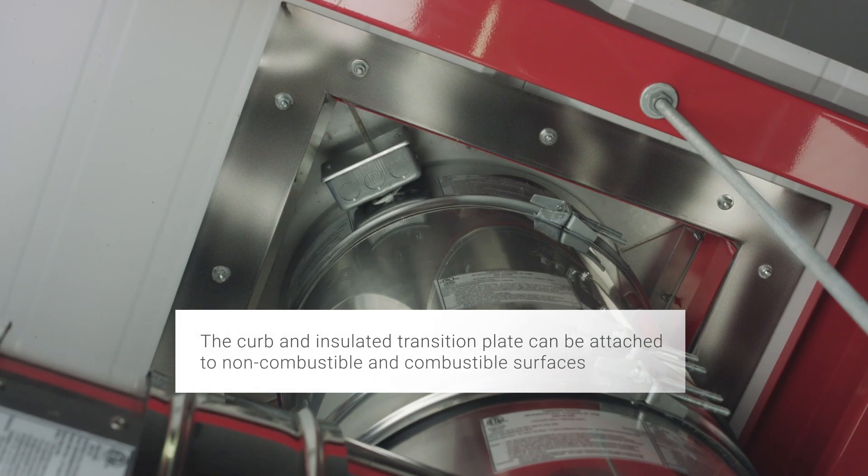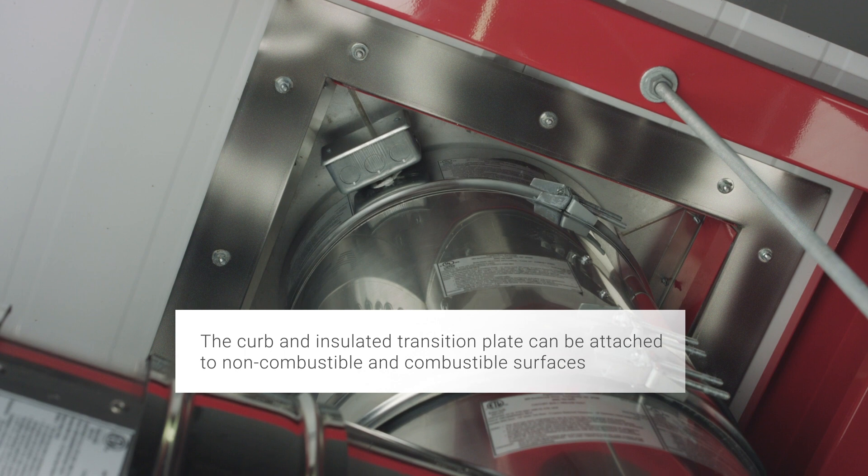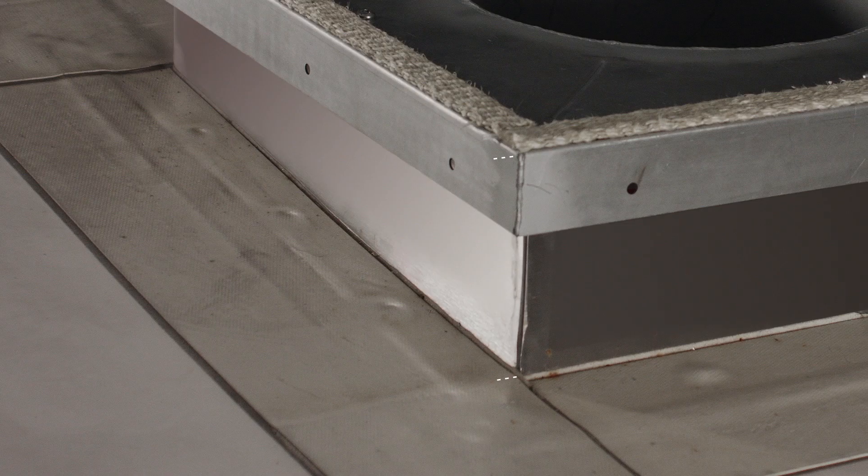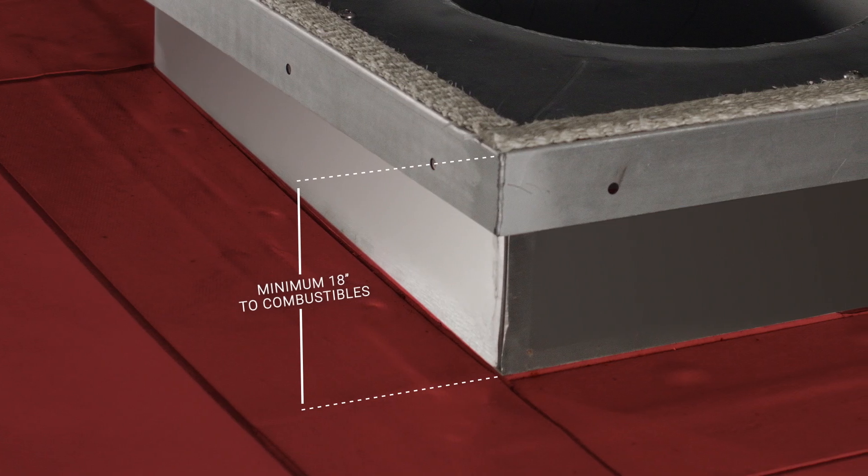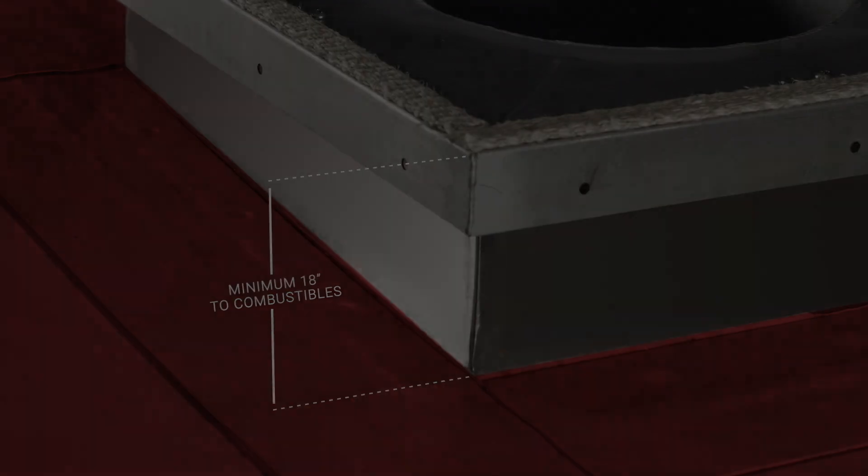The curb and insulated transition plate can be attached to non-combustible and combustible surfaces, but the transition plate must always be at least 18 inches above combustibles.